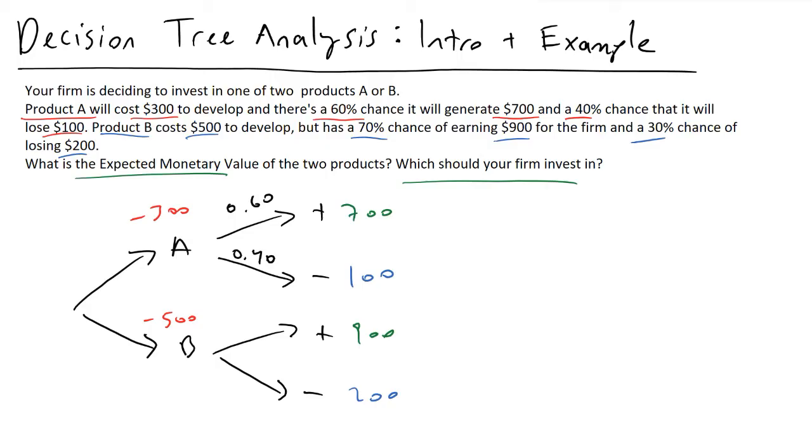For product B, we were told that there is a 70% chance of it being a good situation. So we're going to put a 0.70 right there. And then a 30% chance of us having the bad situation, 0.30.